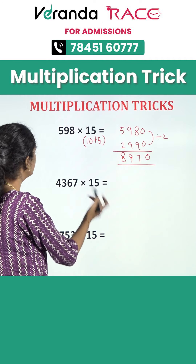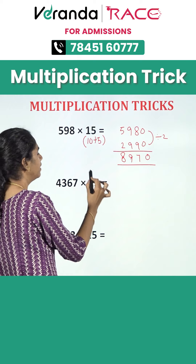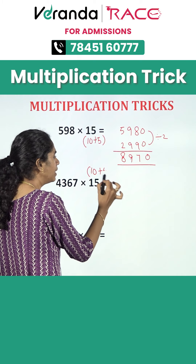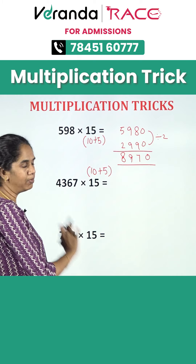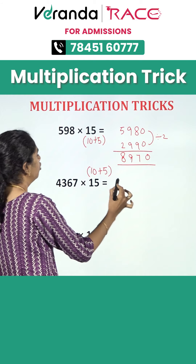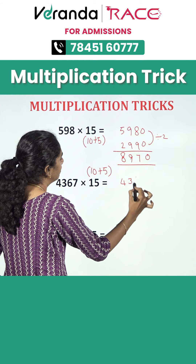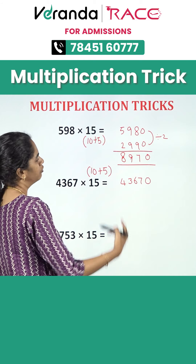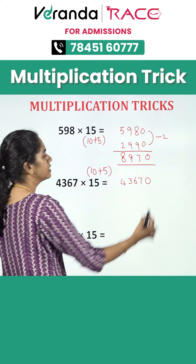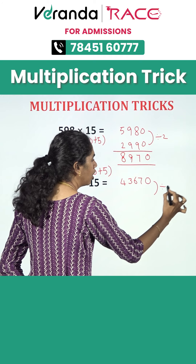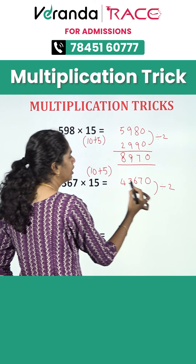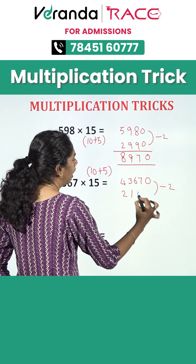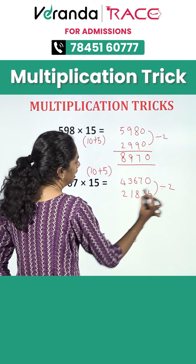Next one: 4367 into 15. We split 15 into 10 plus 5. 4367 into 10 means you will get 43670, and just take half of this value. Half of this value will become 21835.